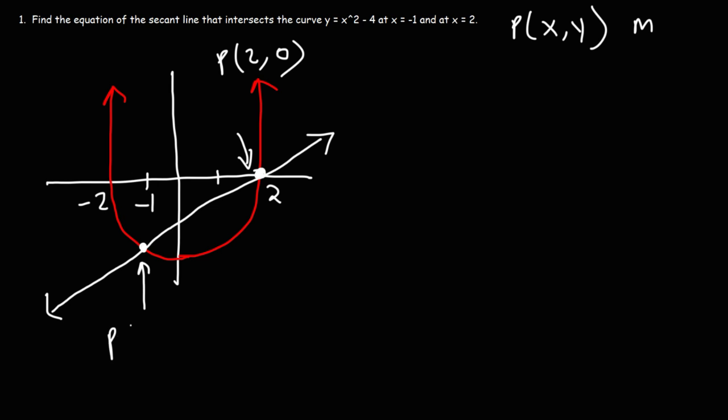For the first one, we know the x value, we don't know the y value. But we can find it by replacing x with negative 1 in that equation. So y is going to be equal to negative 1 squared minus 4. Negative 1 squared is positive 1. 1 minus 4 is negative 3. So we got the point negative 1 comma negative 3.